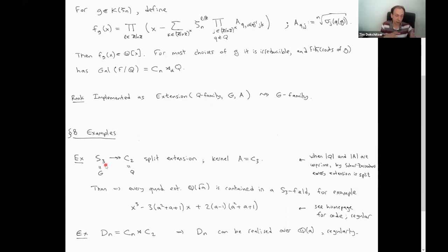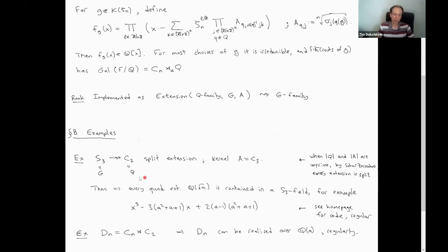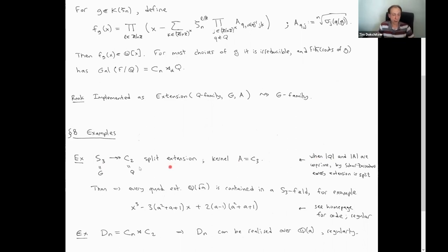S3 turns out to be a split extension of the kernel, which is the cyclic group of order three. S3 is a group of permutations of three letters; the even permutations form a subgroup, and the sign of a permutation gives a homomorphism to C2. It's a split extension, which is a general result following from cohomology: there's some group H²(Q, A) which classifies these extensions, and if the orders of Q and A are coprime, this group is trivial. So there are no extensions other than the trivial one, the semi-direct product. This is called the Schur-Zassenhaus theorem.